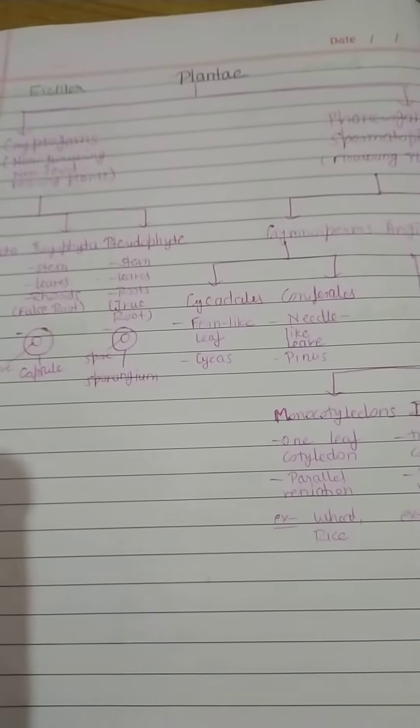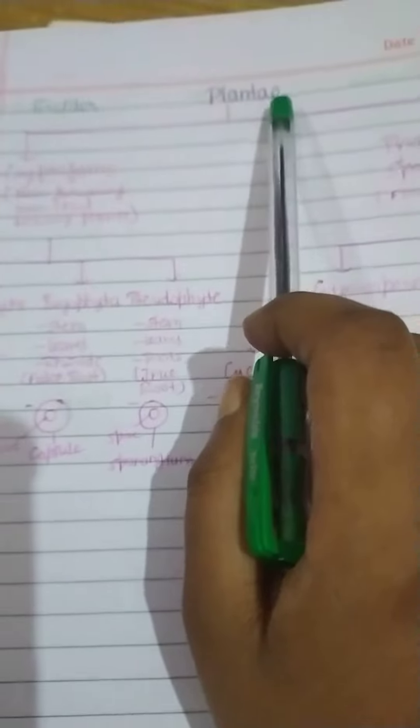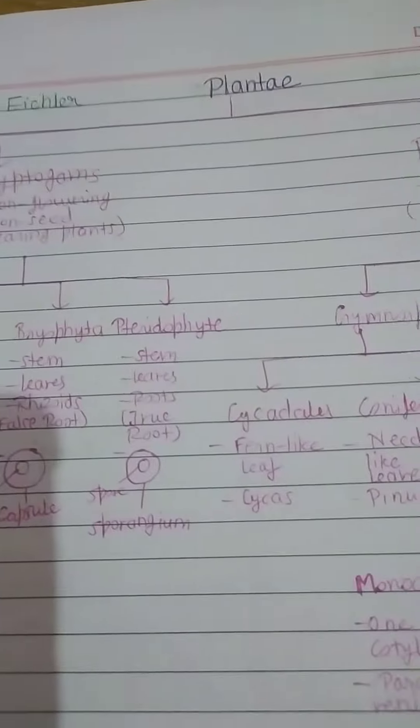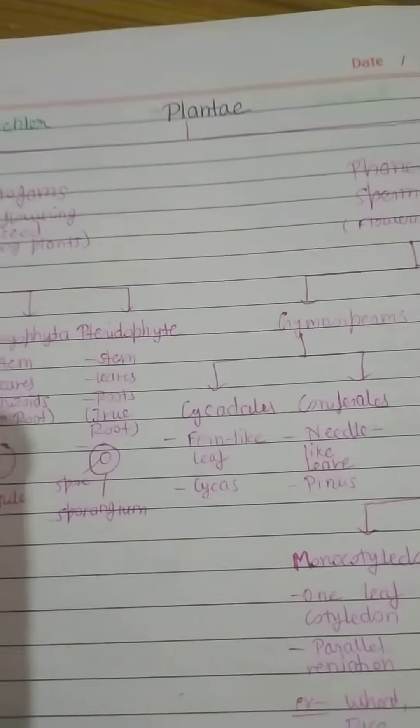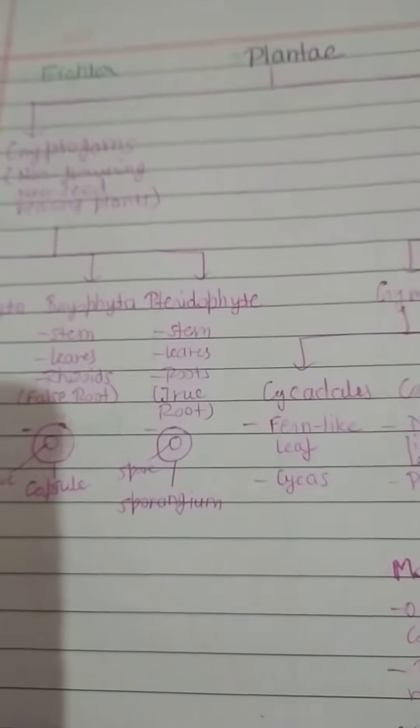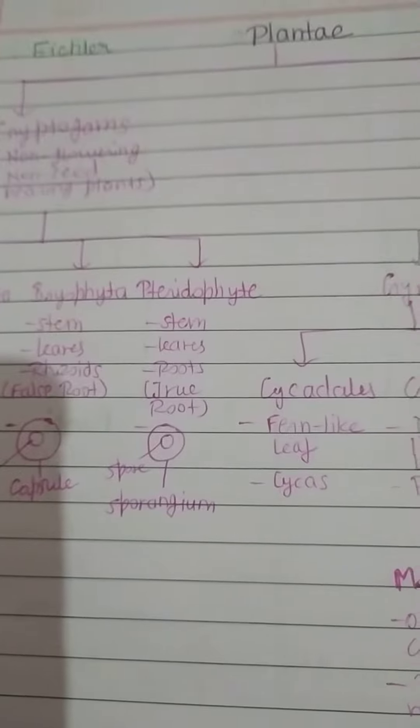Today I'm going to tell you about the new kingdom that is Plantae. Plantae is eukaryotic and they are also multicellular. Its classification was given by Eichler and they are chlorophyllous — they consist of chlorophyll and they are autotrophs.